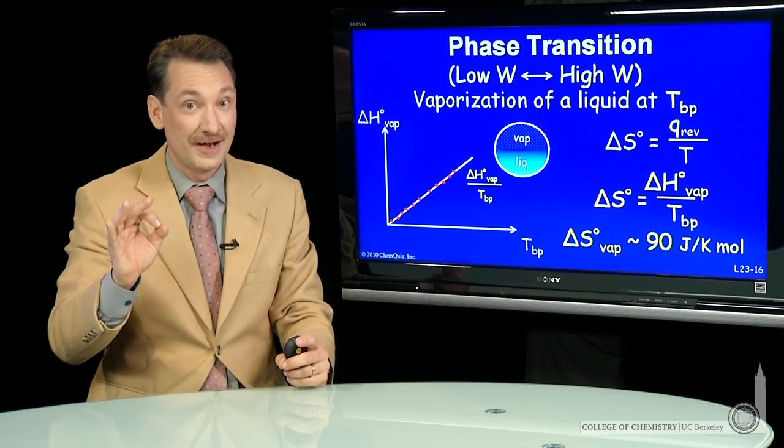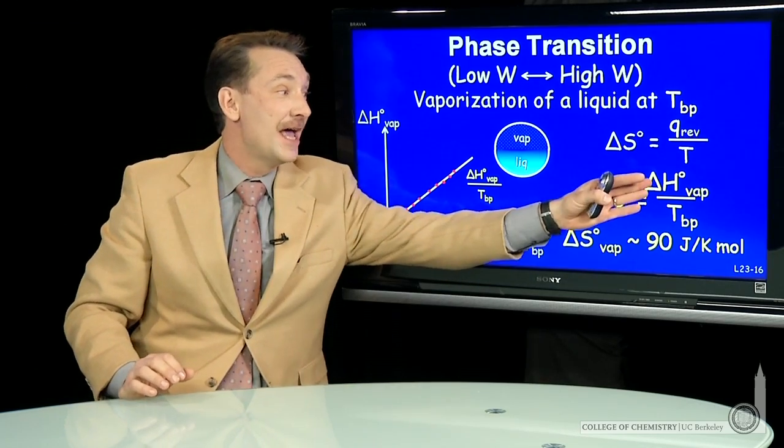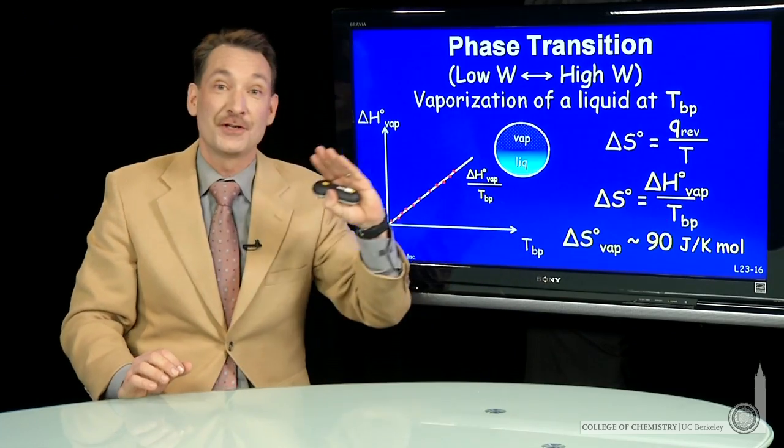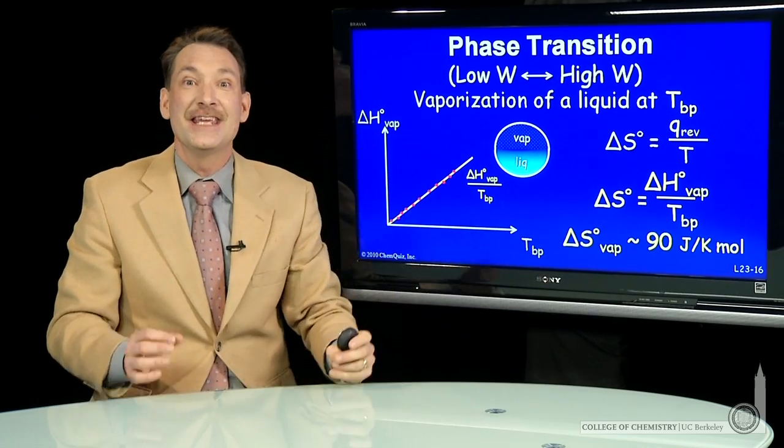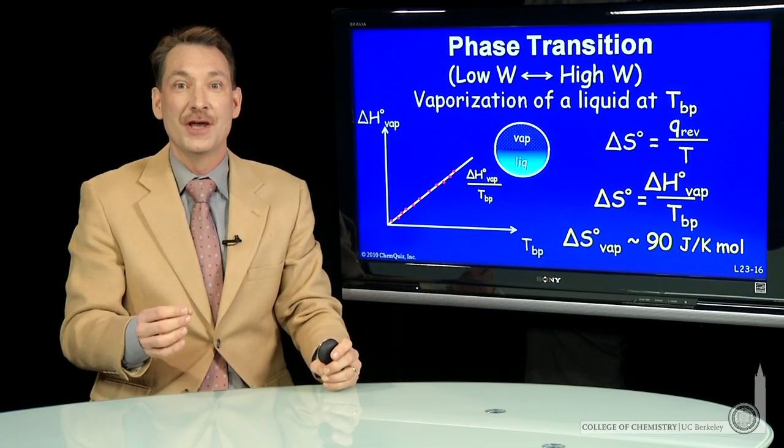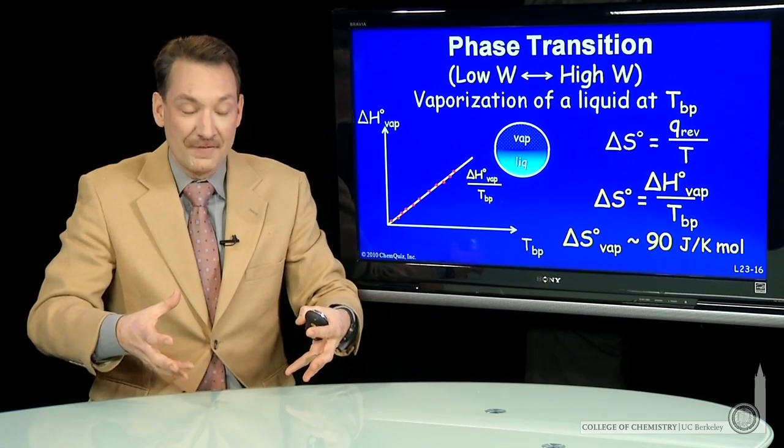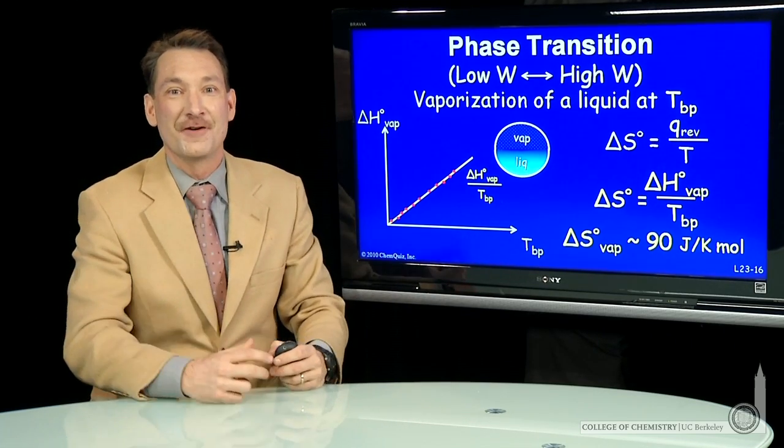So the entropy of vaporization is relatively independent of the particle, because enthalpy over temperature represents a state function - the entropy of vaporization - which is representative of an increase in microstates for that transition.